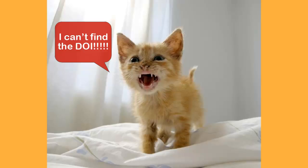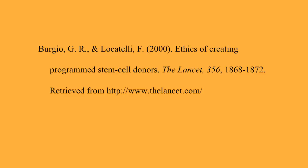If you can't find your article's DOI in any of those places, don't worry. If there's no DOI, follow APA rules and include the words 'retrieved from,' followed by the URL or web address for the journal homepage. This URL is not the direct URL for the article, but for the journal homepage.